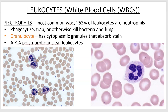Neutrophils are the most common. They're big phagocytes — they can kill bacteria and fungi and other ways as well. They're a granulocyte, and they have another nickname: polymorphonuclear leukocytes. The term polymorphonuclear pretty much means that the nuclei are all different shapes, and you can see that from these images.